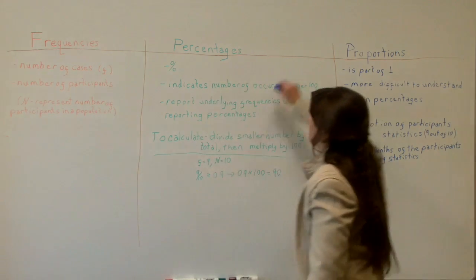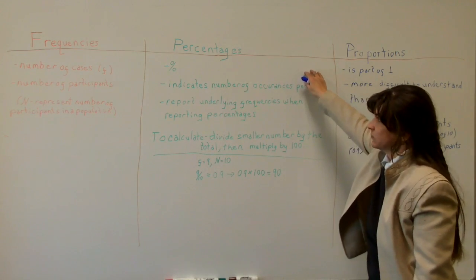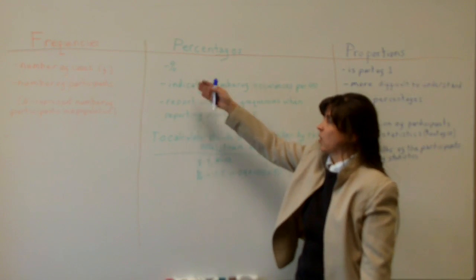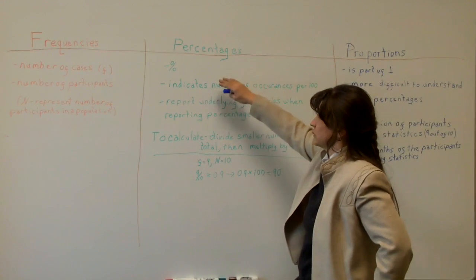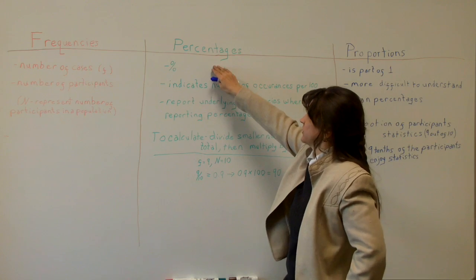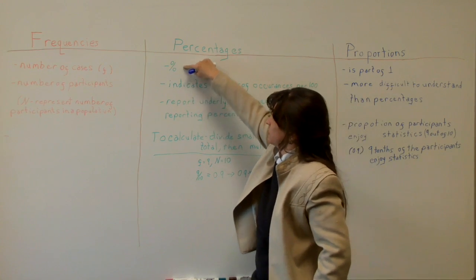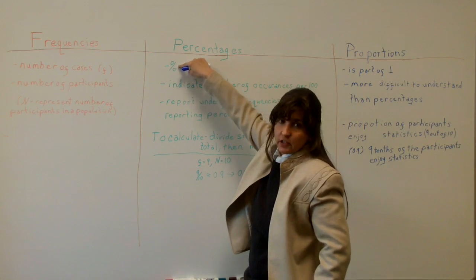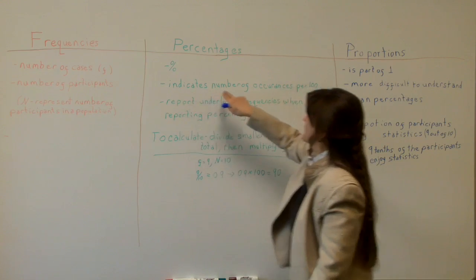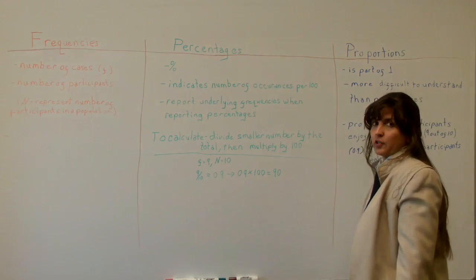Now for percentages. Frequencies can also describe how often something occurs — how often a score occurs. For percentages, the symbol used is the percent symbol. This indicates the number of occurrences per 100.